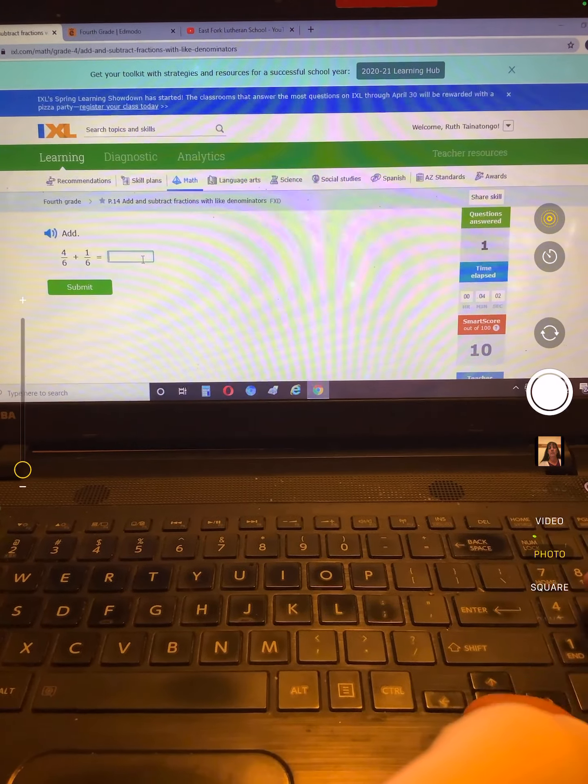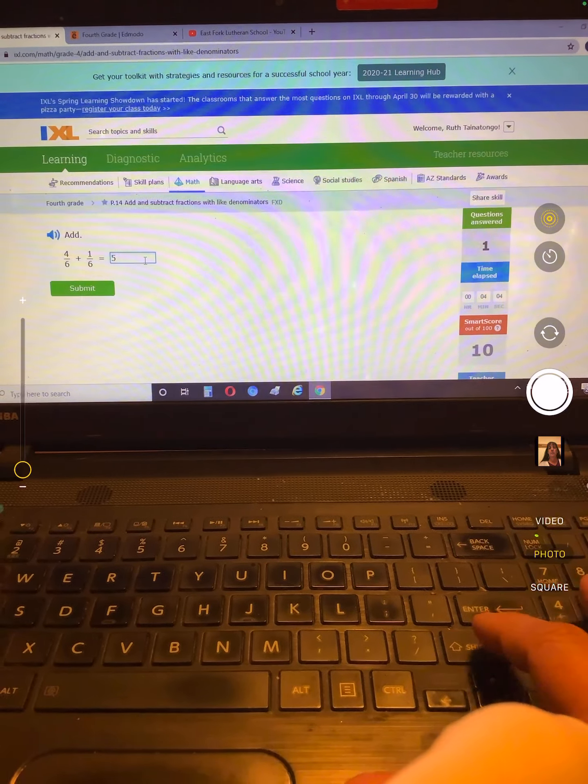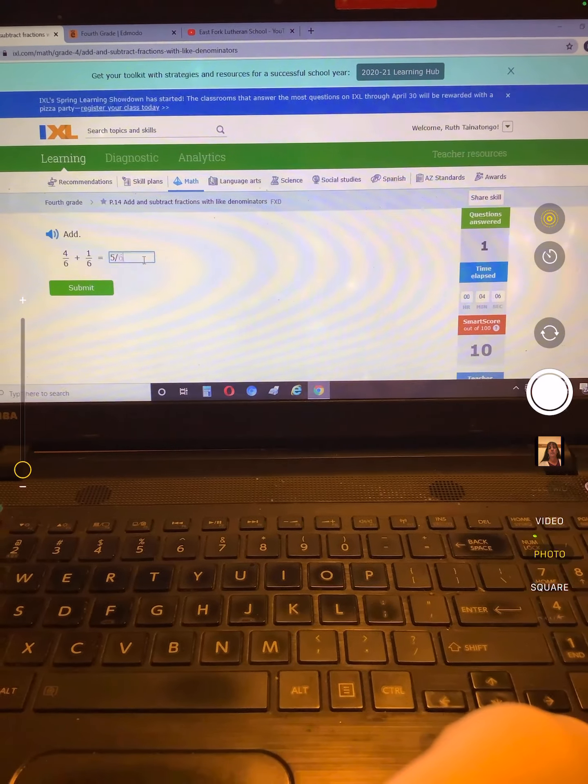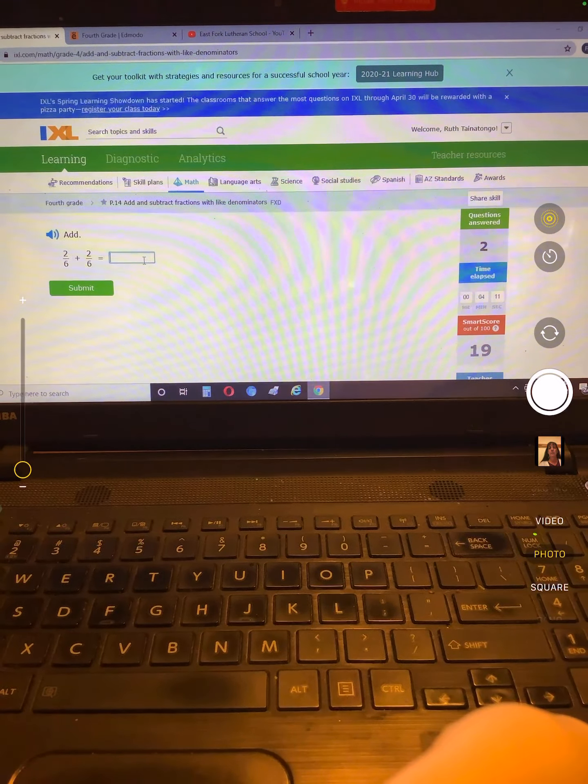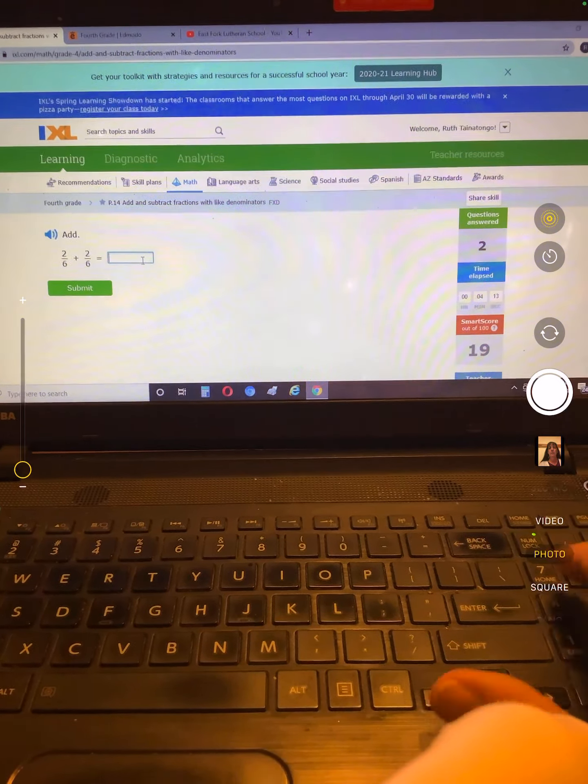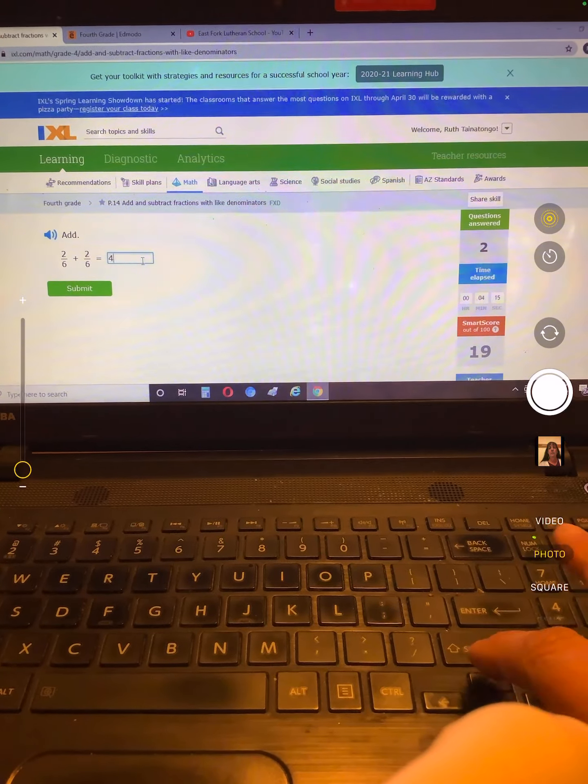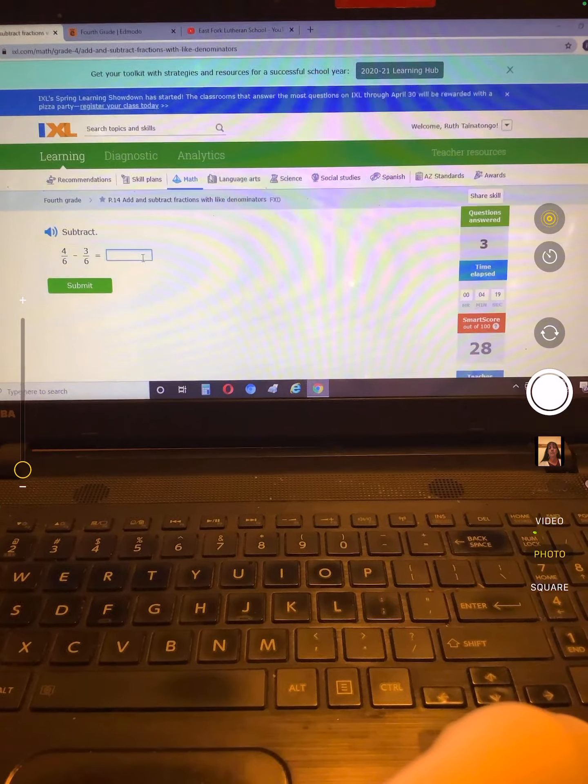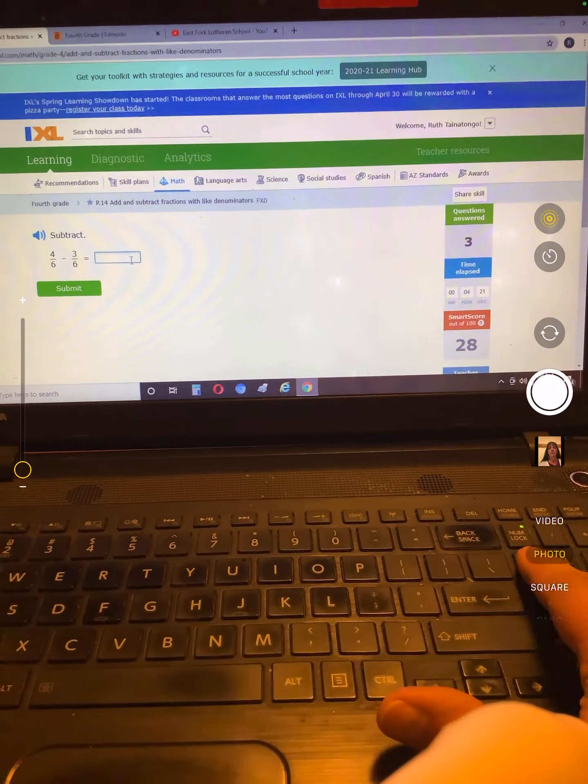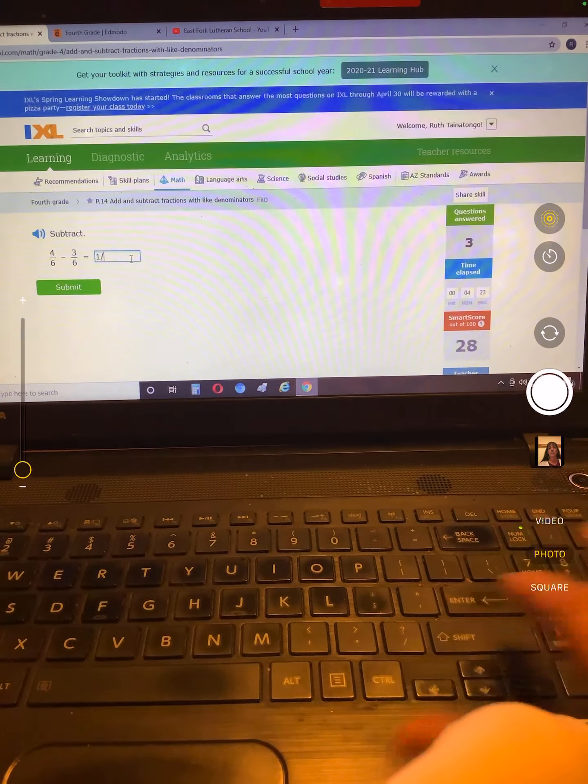Four sixths plus one sixth is five sixths. That's all you have to do. Leave the bottom number alone. Two plus two is four slash six. Four minus three is one slash six.